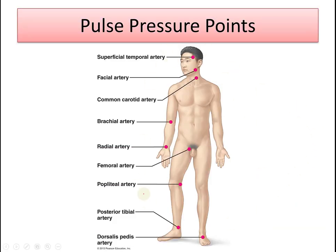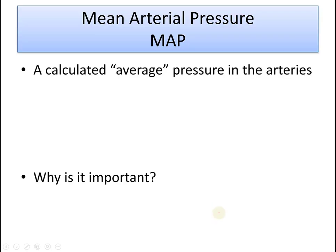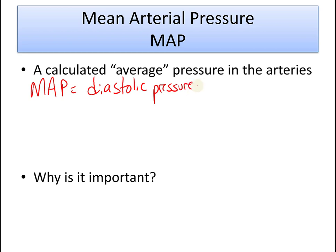There are several places to measure pulse in the body — the radial artery is usually where people take pulses, and the brachial artery is where blood pressure is usually measured. Another commonly used hospital term is mean arterial pressure, or MAP — a calculated average pressure in the arteries. The formula is: MAP = diastolic pressure + (pulse pressure / 3).